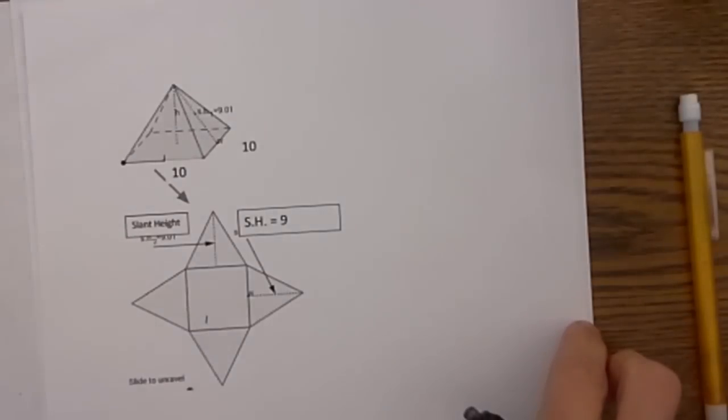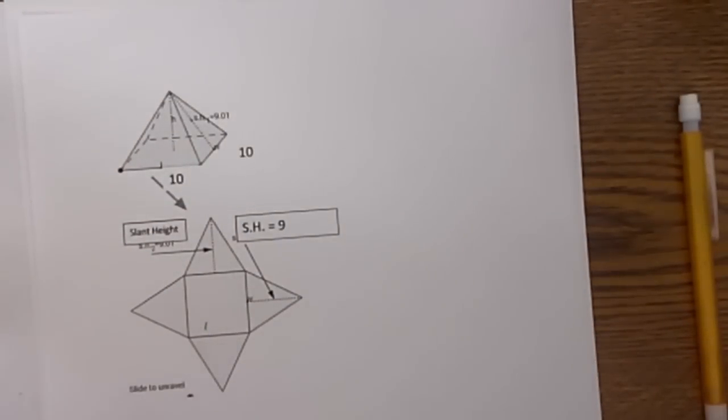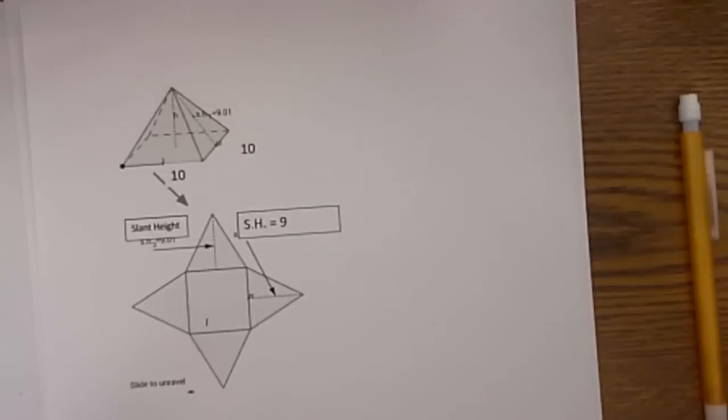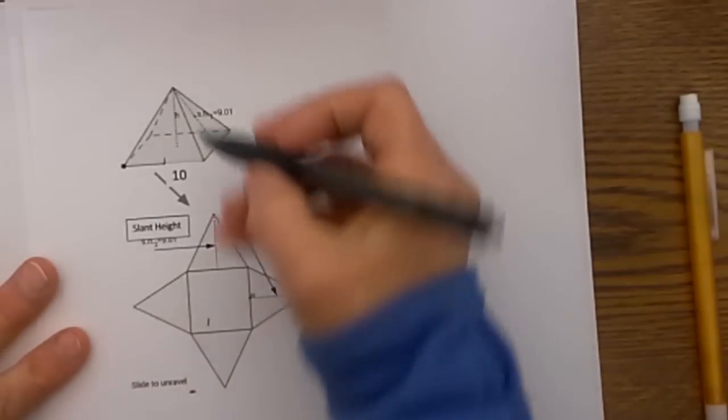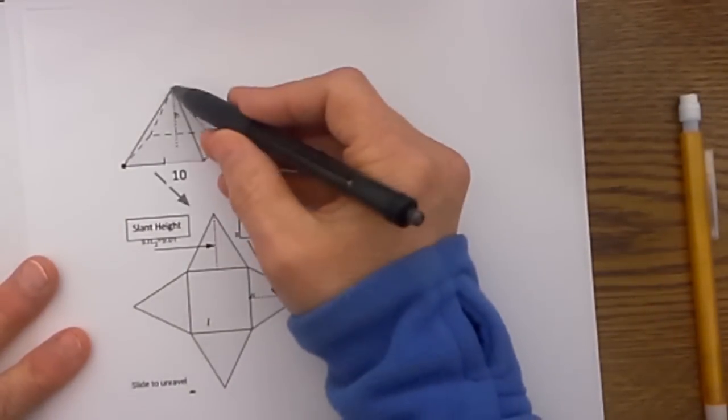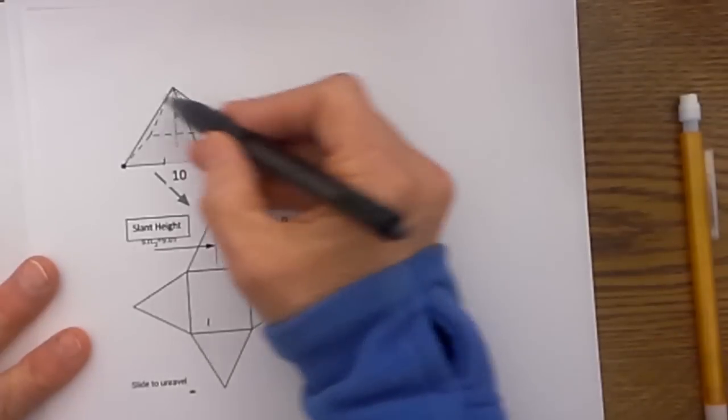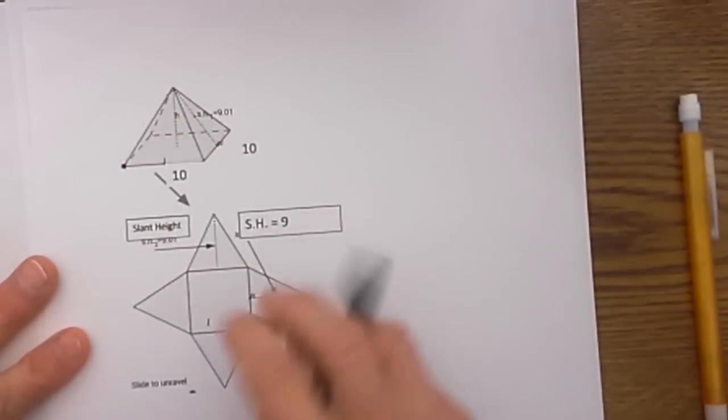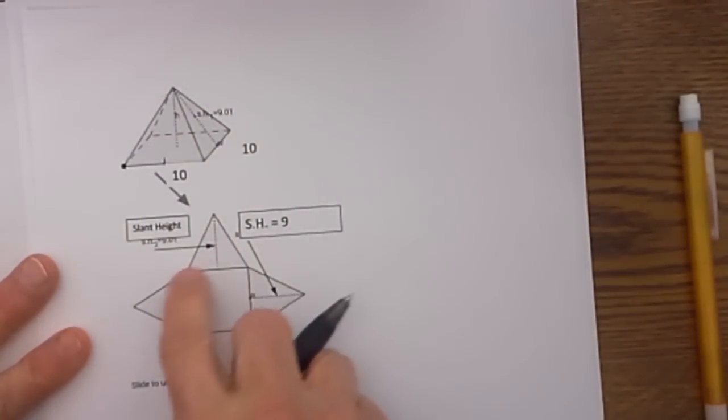Our formula works like this. We have to have two parts to our formula. The first part is the lateral area. The lateral area are these triangles on the outside that go around the triangle. So if you take this and fold it out you can see that this lateral area is just four triangles.